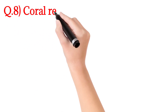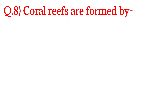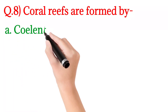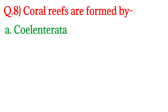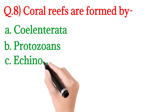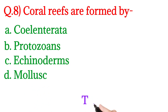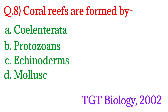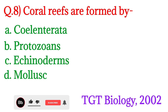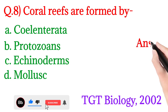Next question number 8: Coral reefs are formed by — coral चट्टानें कौन से जन्तु बनाते हैं। Option A is Coelenterata, Option B is Protozoans, Option C is Echinoderms, and Option D is Mollusks. यह question TGT Biology 2002 में पूछा गया था। इसका answer होगा Option number A — Coelenterata.